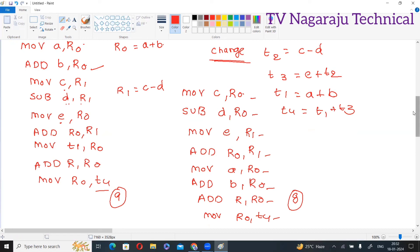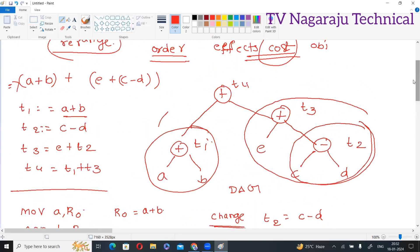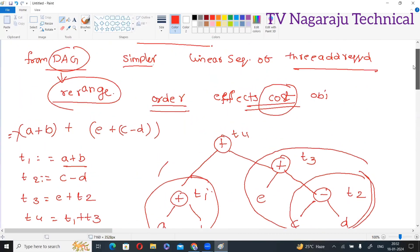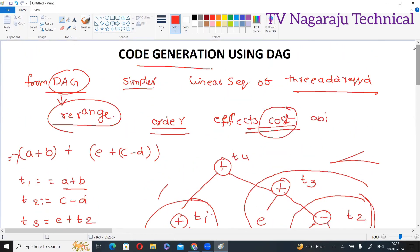Even one instruction reduced improves the performance a lot. That means you understand, instead of three address code, we can generate the code by using DAG. Once we construct the DAG, we can change the order. This is the way we generate code from the DAG.